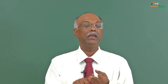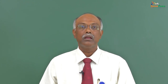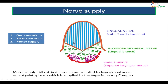The anterior two-thirds and the posterior one-third and the posterior-most part of the tongue each have different nerve supplies. General sensations from the anterior two-thirds are carried by the lingual nerve. Taste sensations from the anterior two-thirds are carried by the chorda tympani, which is a branch of the facial nerve running with the lingual nerve. Taste and general sensations from the posterior one-third are carried by the glossopharyngeal nerve, and from the posterior-most part by the superior laryngeal branch of the vagus nerve.